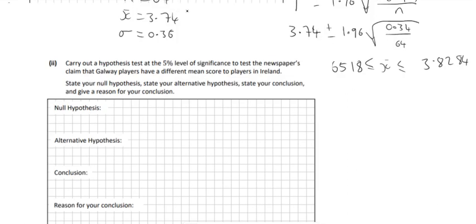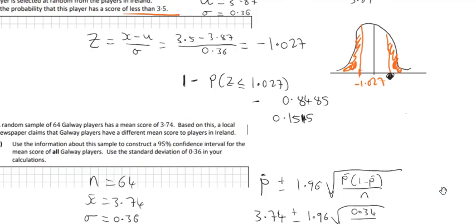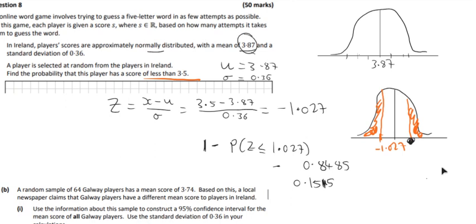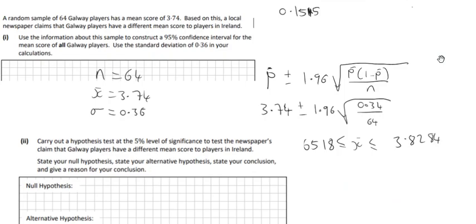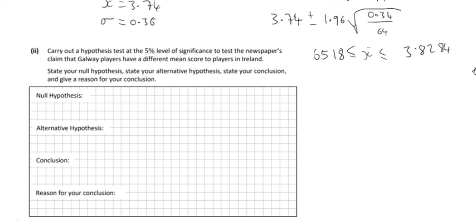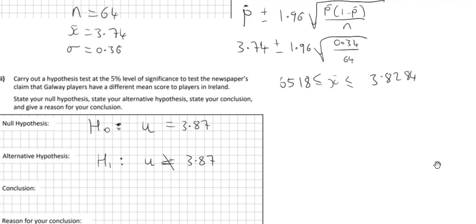Now we do a hypothesis test at the 5% level of significance. The original mean score was 3.87. The null hypothesis H₀ is that the mean equals 3.87. The alternative hypothesis H₁ is that the mean is not equal to 3.87. We'll use the confidence interval to test this.